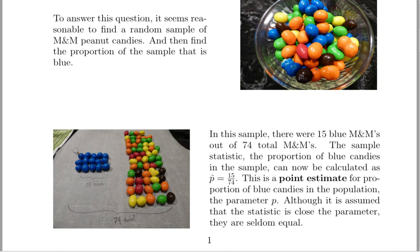In this case, we found 15 blue M&Ms out of 74 total. So the proportion in the sample, which we'll call P-hat, is 15 over 74. This is a point estimate for the population mean. The sample mean is seldom actually equal to the population mean, but we're hoping that it's close.